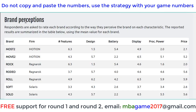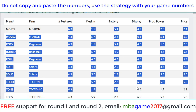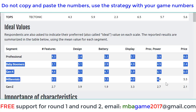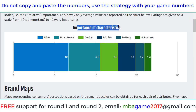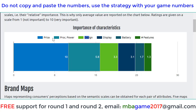You can see the brand perception for each product here, and you see the ideal value to update the product to sell better for each round. Check the importance of characteristics — for example, for the Sol9 market, price and processing power are very important, along with design.